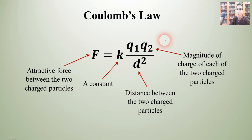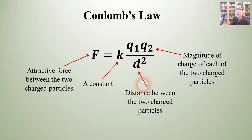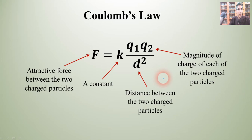So I want you to notice that there are two factors at play in Coulomb's Law. The Q — the charge — tells us that the greater the charge, the greater the force. And the D — the distance — tells us that the greater the distance, the lower the force. We're going to use this trend to help us make predictions over the course of AP Chemistry.